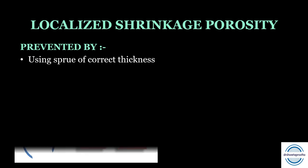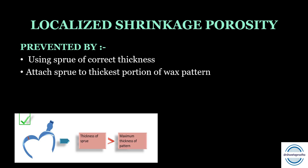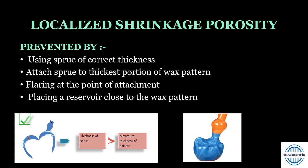Localized shrinkage porosity is prevented by: using a sprue of correct thickness (greater than the maximum thickness of the pattern), attaching the sprue to the thickest portion of the wax pattern so metal stays molten until the mold is filled, flaring at the point of attachment to reduce turbulence, and placing a reservoir close to the wax pattern. The reservoir is additional wax added just below the pattern that keeps alloy liquid until the mold cavity is filled and solidifies last.